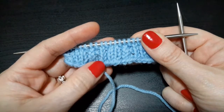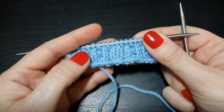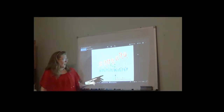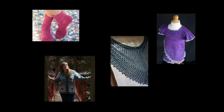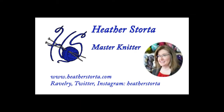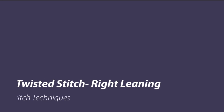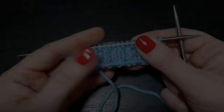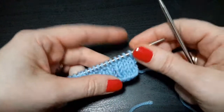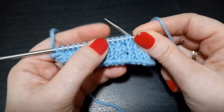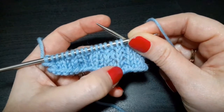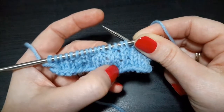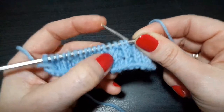In this video I will show you this twisted stitch that leans to the right. A right-leaning twisted stitch is the mirror of a regular twisted stitch, which is a knit through the back loop. Here is a regular twisted stitch and it leans to the left — that is a knit through the back loop. And here is its mirror, which is a twisted stitch that leans to the right.